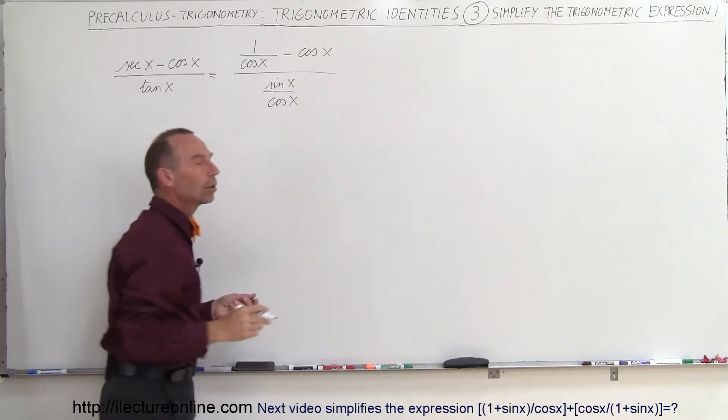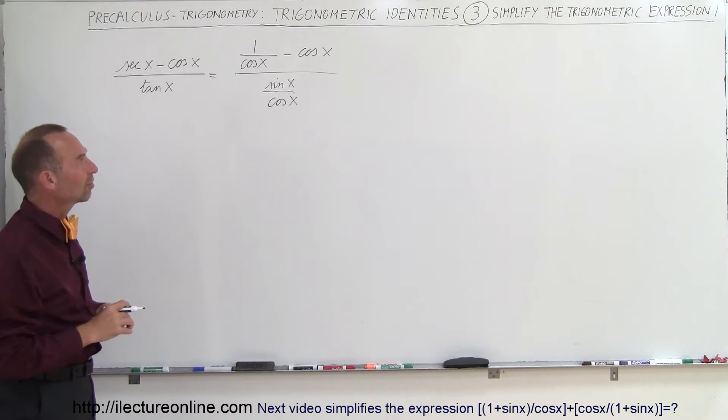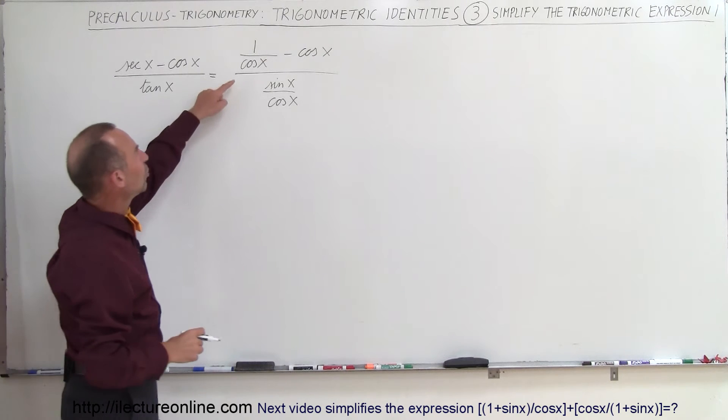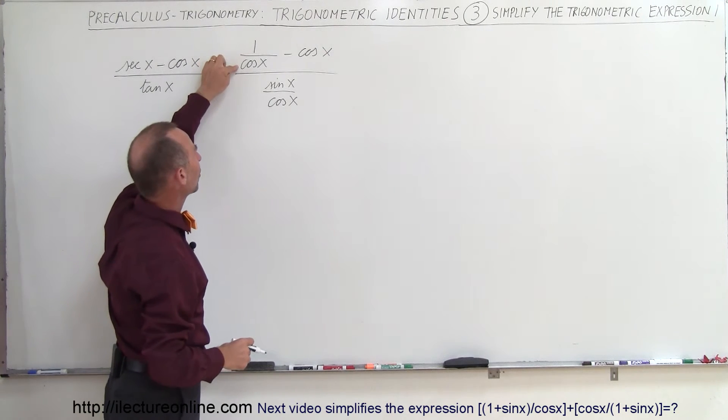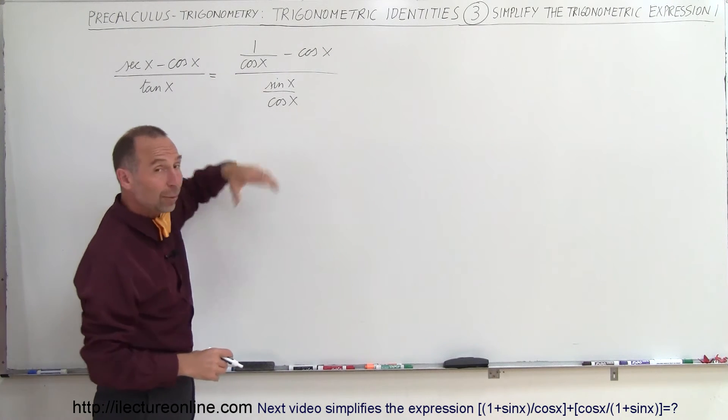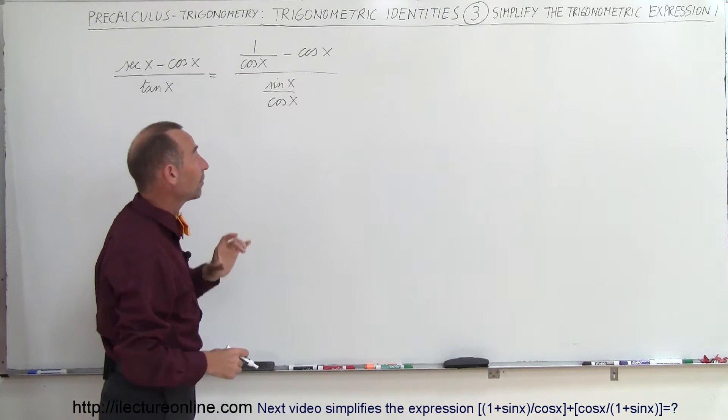And now we have a complicated fraction. How do we simplify that? Well notice that in the numerator we have a fraction that has cosine in the denominator. In the denominator we have a fraction that has cosine in the denominator.